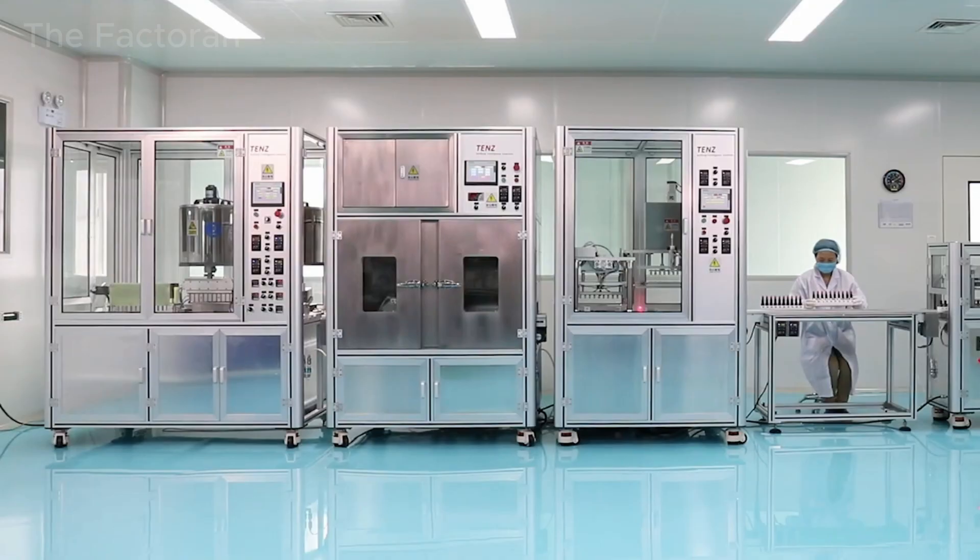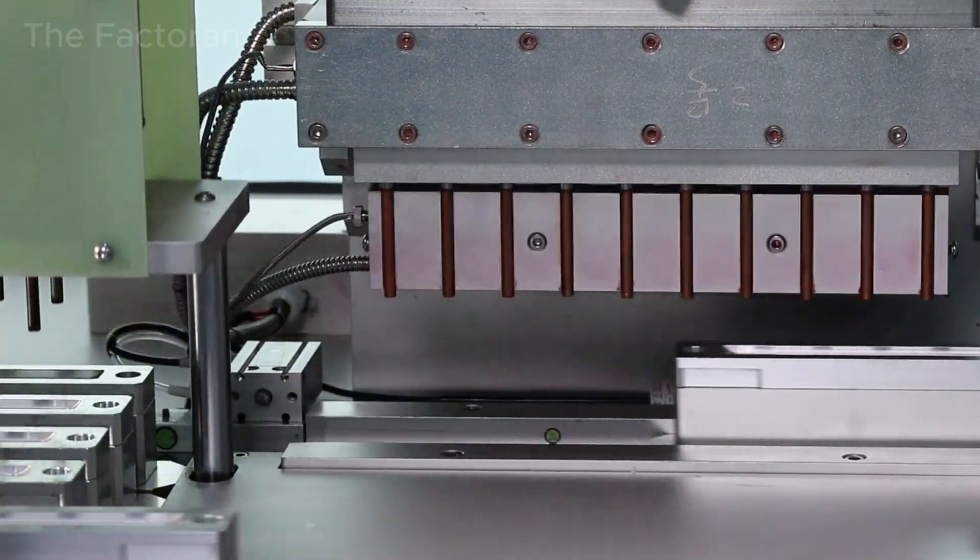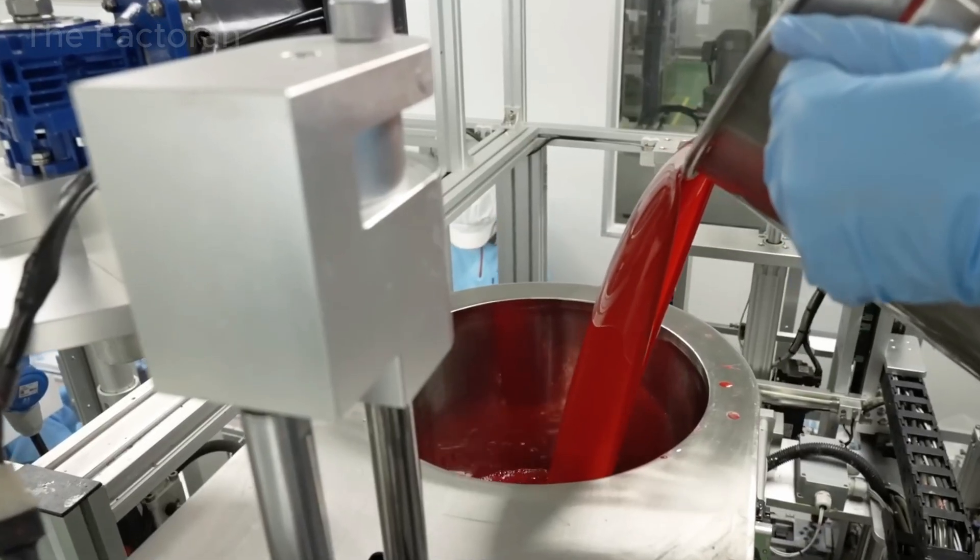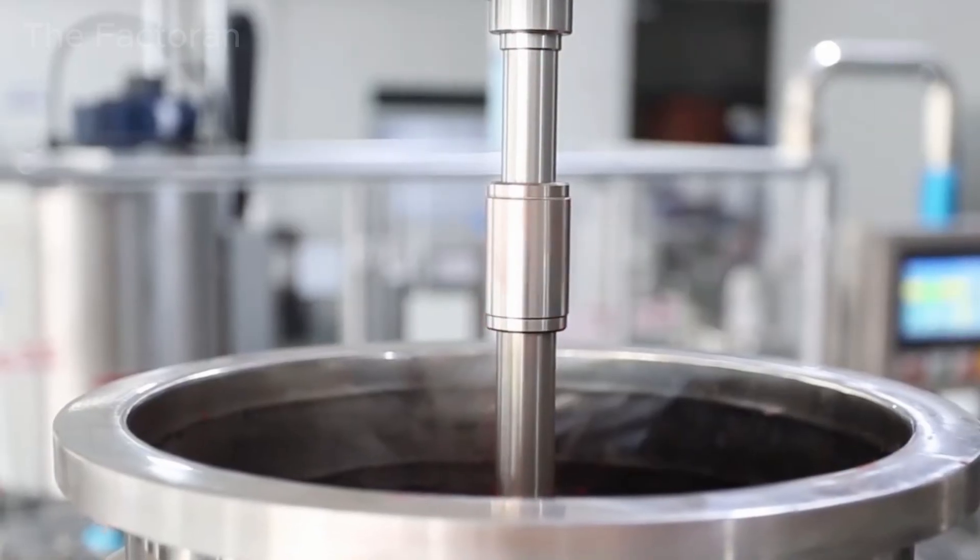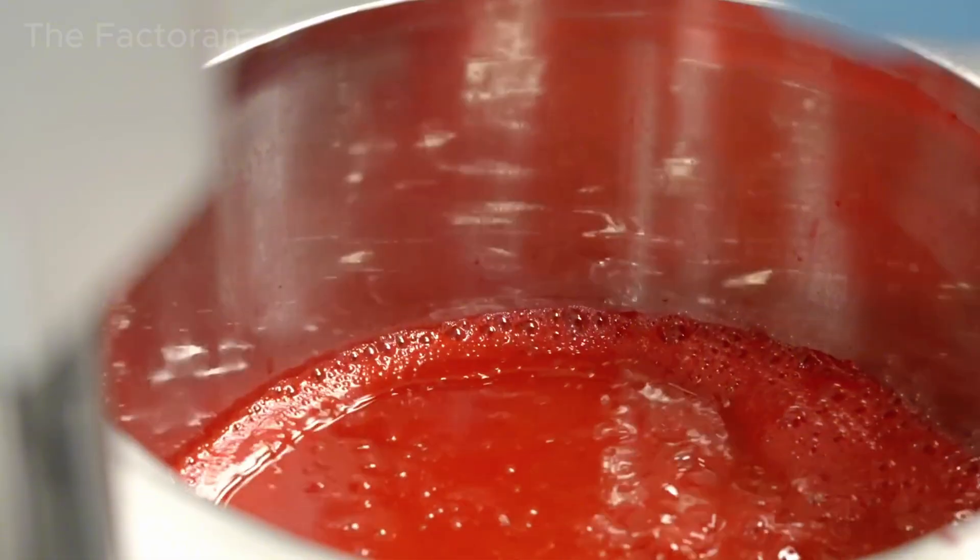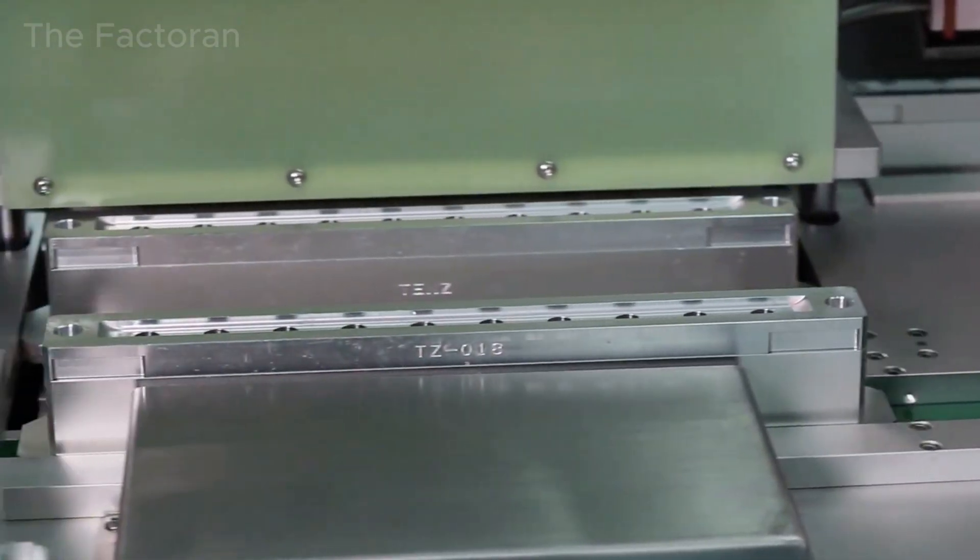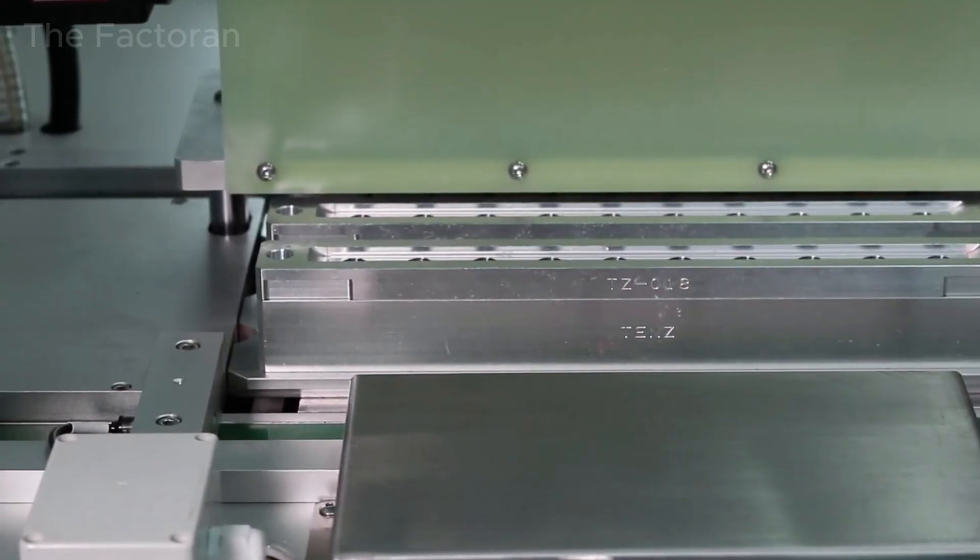While the lipstick mixture is still hot and has reached the appropriate viscosity, it is transferred to the filling station. Here, the liquid lipstick is fed into a specialized filling machine equipped with a continuous stirring mechanism, ensuring the mixture remains uniform throughout operation. Metal molds, preheated in advance, are positioned sequentially beneath the filling machine.